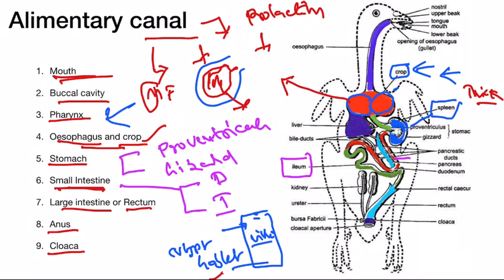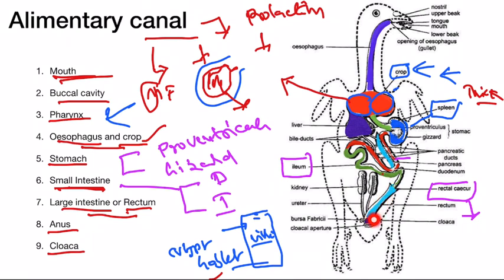The next part of the digestive system is the rectum or large intestine. The ileum joins with the large intestine or rectum. At the junction of the ileum and rectum, rectal caeca are present, which may be helpful for absorbing water from the food. The rectum is differentiated into two parts: the anterior part is called rectum and the posterior part is called cloaca.